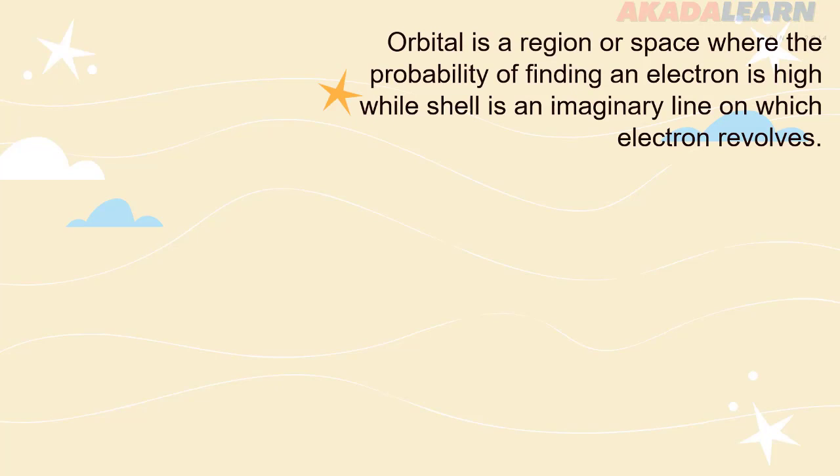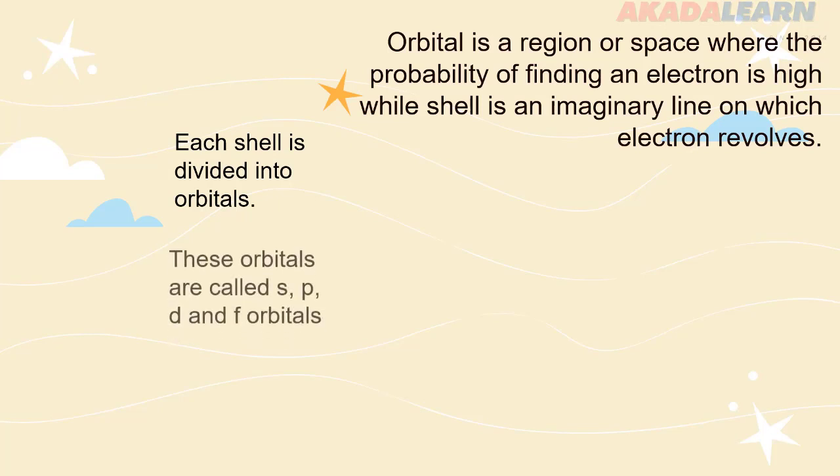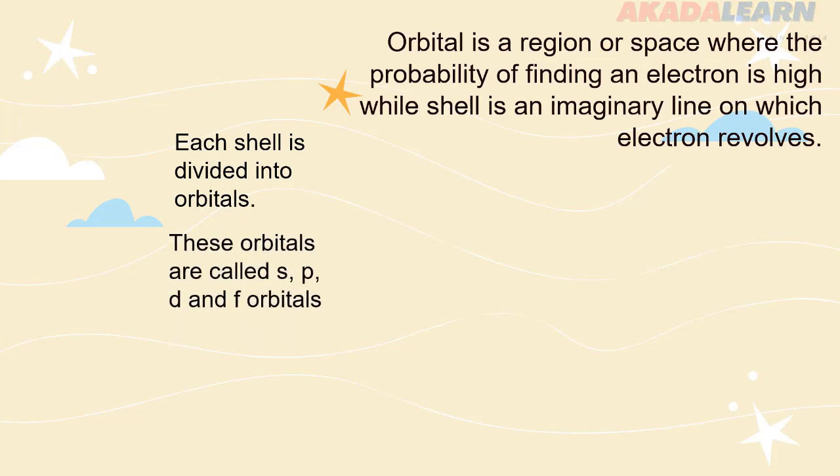And now, what is an orbital? An orbital is a region of space where the probability of finding an electron is high, while a shell is an imaginary line on which electrons revolve. Each shell is divided into orbitals. These orbitals are called S, P, D, and F orbitals.